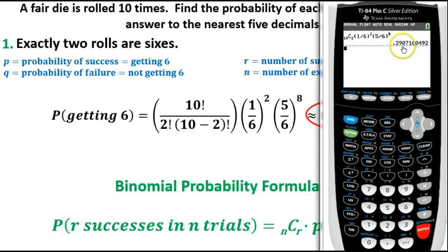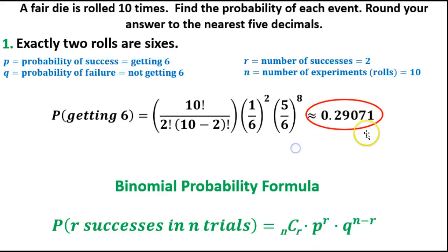Here it gives our answer right here. Remember, we've got to round to the nearest five decimals, 0.29071, which is what we've got here. That's pretty much it. It's just making sure you can plug in P and Q, those are the big ones. We need the probability of our successes, and Q is the probability of our failure. We just type it into the calculator and it spits out the answer for us.